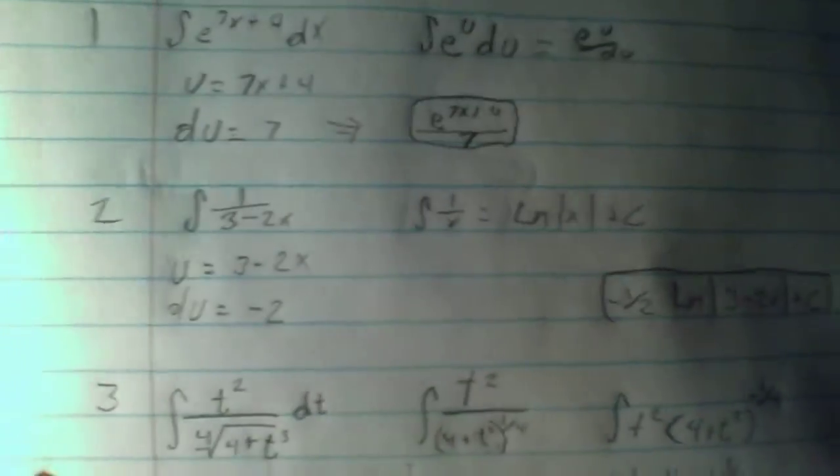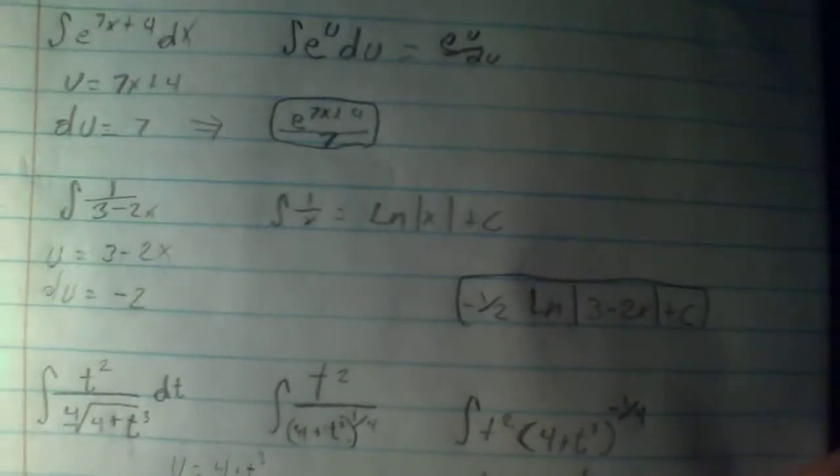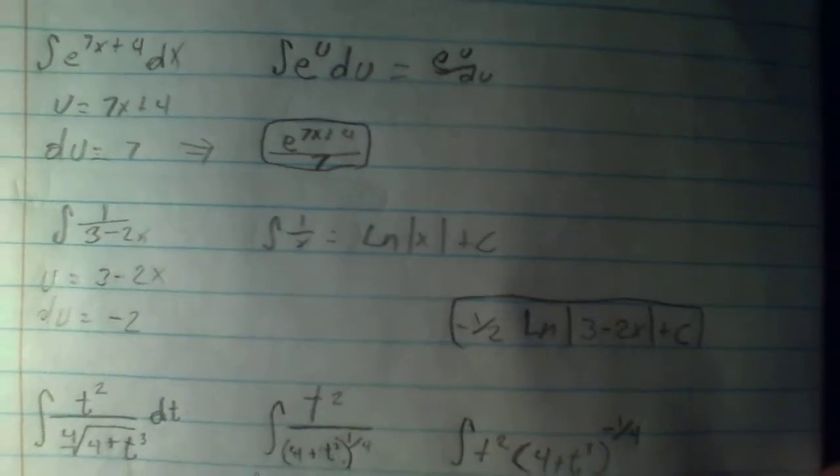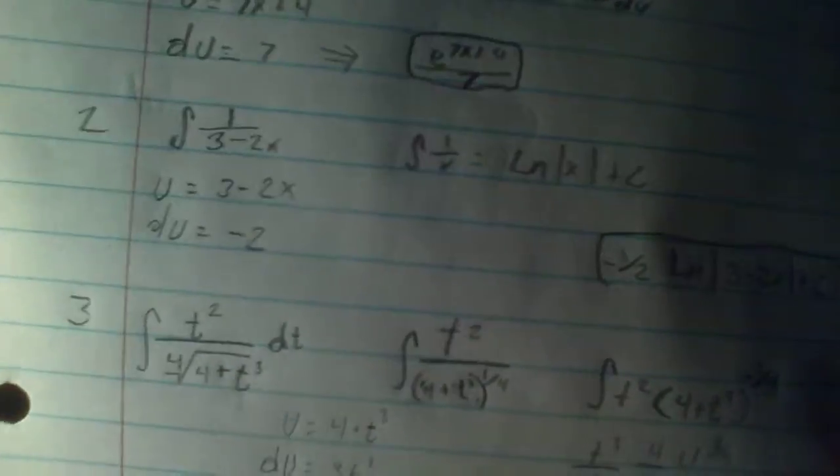Since DU is going to be negative 2, that's going to be negative 1 half in front and then times 2. And somehow the 2 cancels out, so I can't really ask my tutor how. But nonetheless, it's a lot easier than it looks.